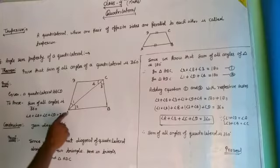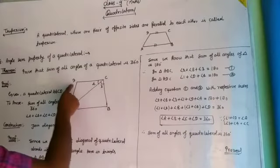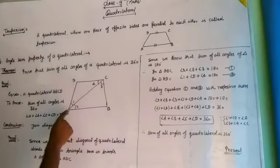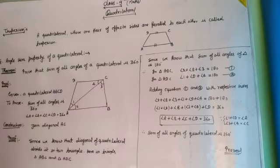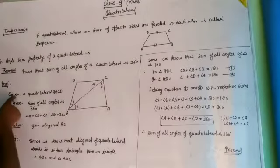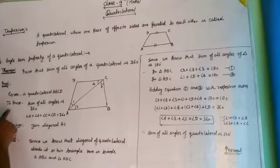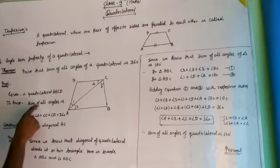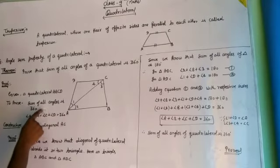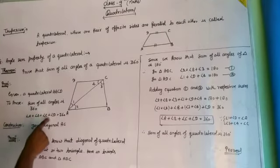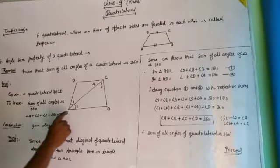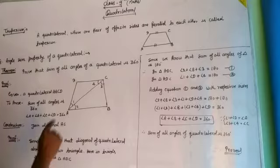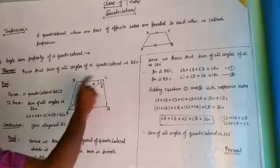Proof. Given: a quadrilateral A, B, C, D. To prove: angle A plus angle B plus angle C plus angle D is equal to 360 degrees. Construction: join diagonal A to C.